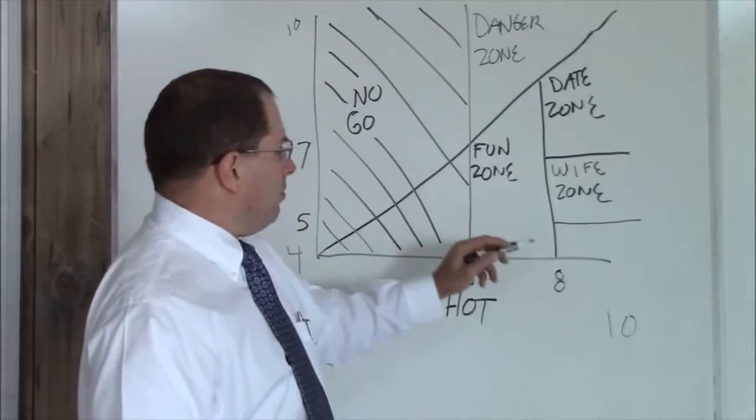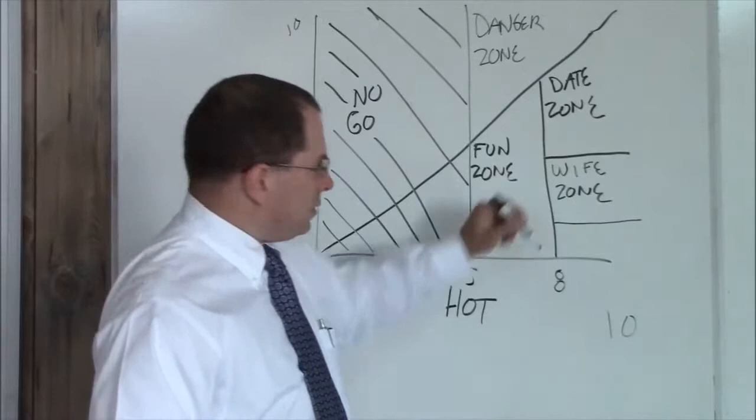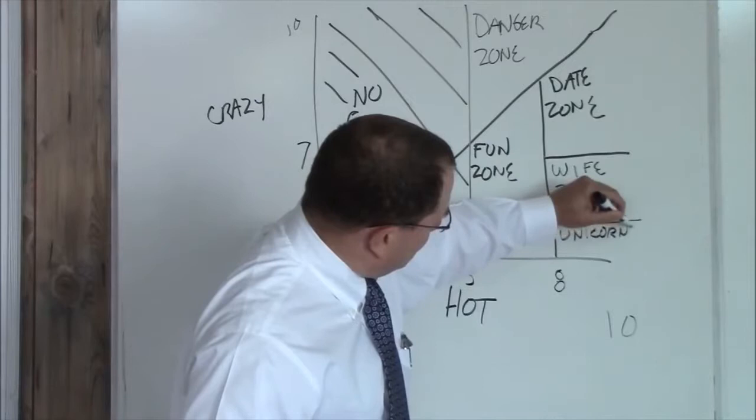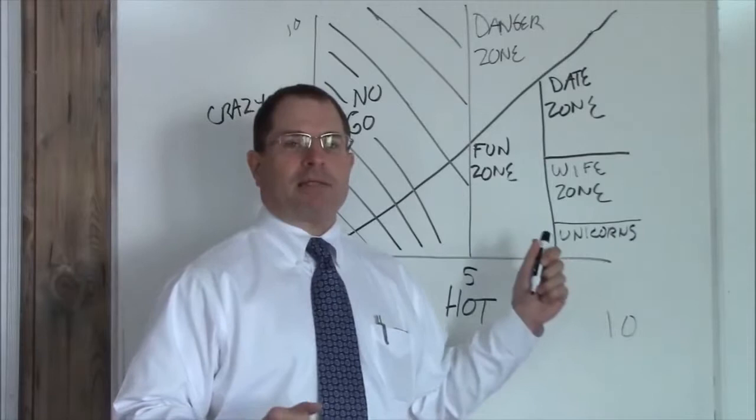Now below a five crazy and above an eight hot, this is your unicorn zone. These things don't exist. If you find a unicorn, please capture it safely, keep it alive. We'd like to study it and maybe look at how to replicate that.